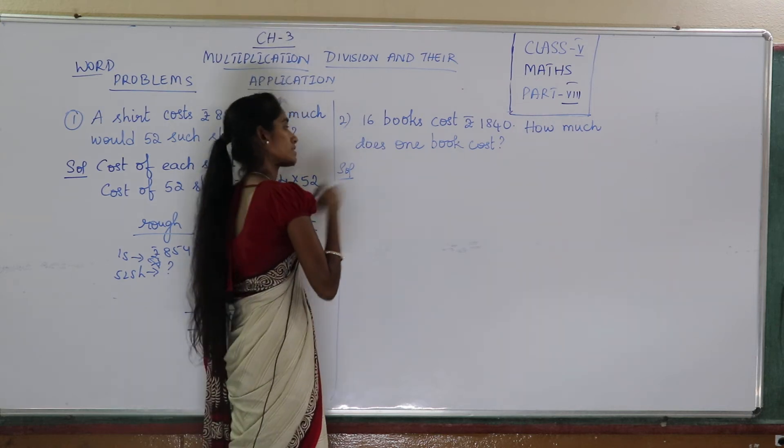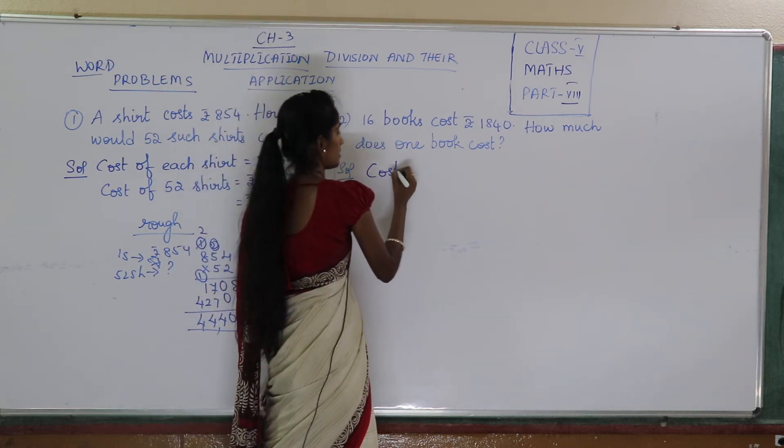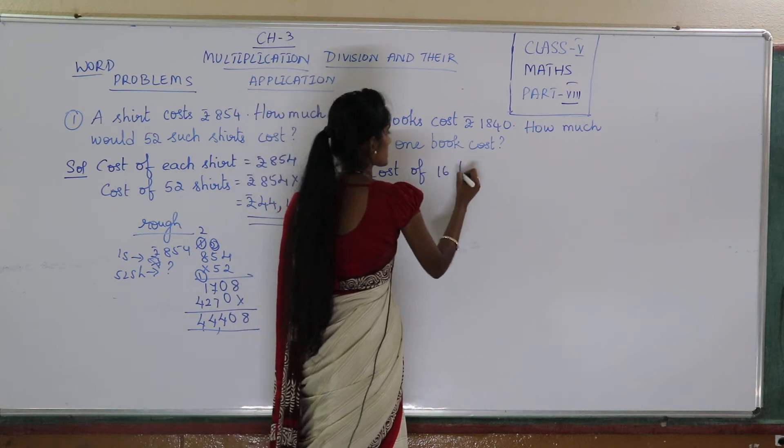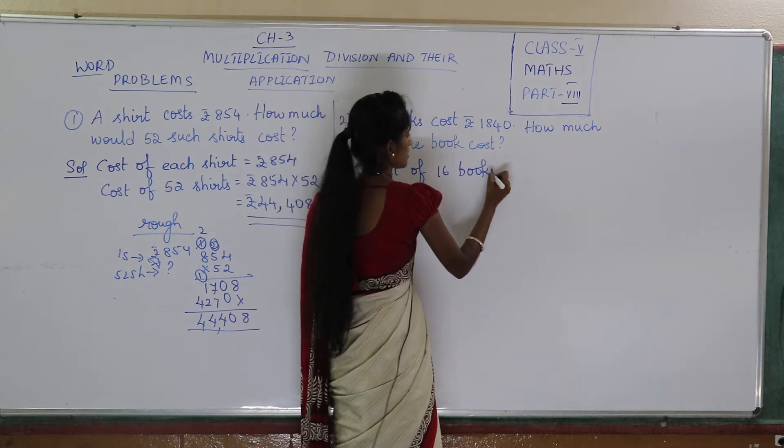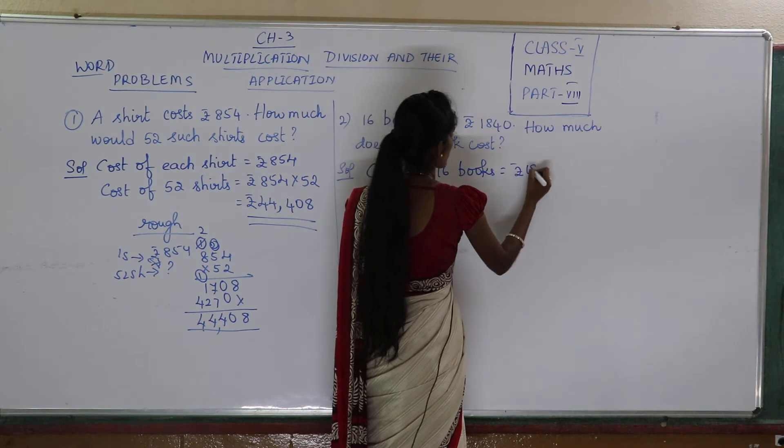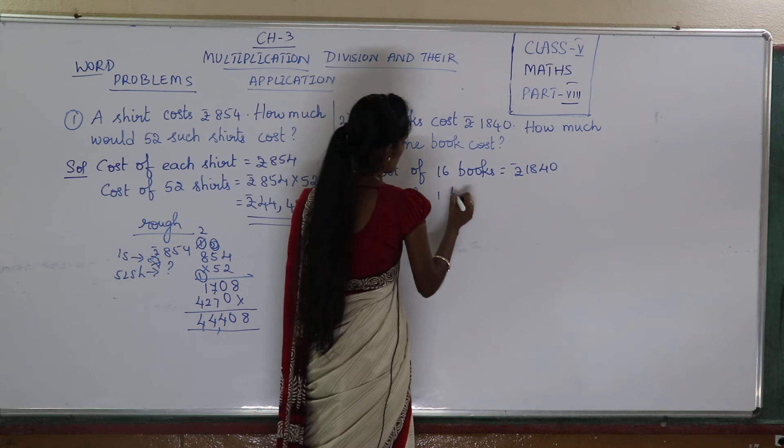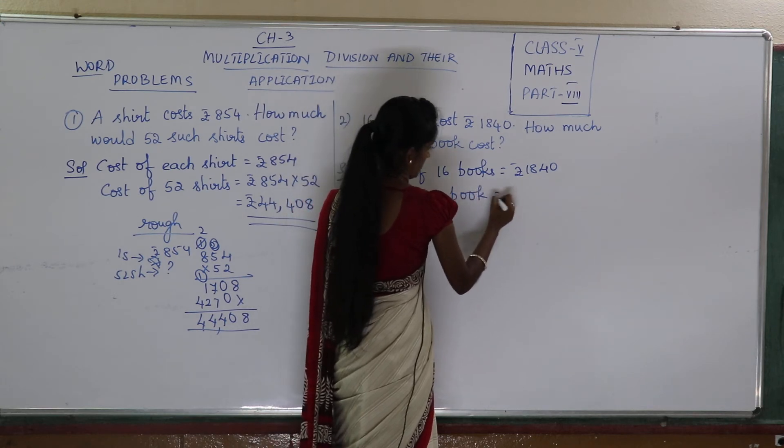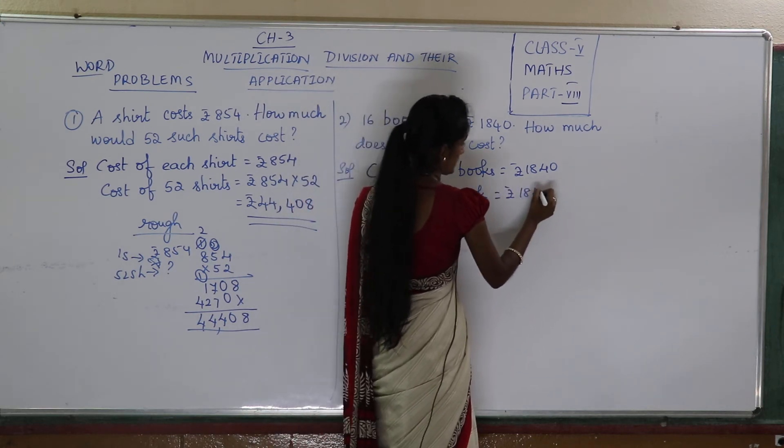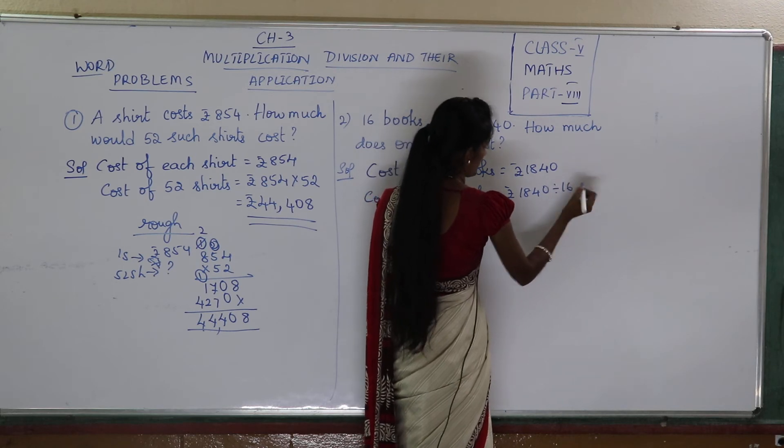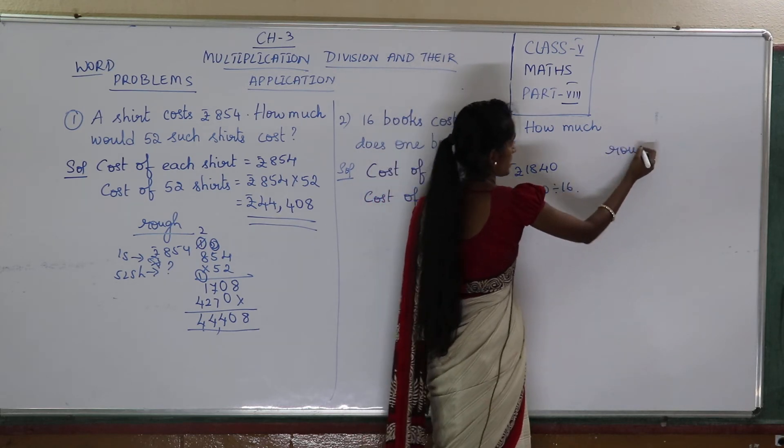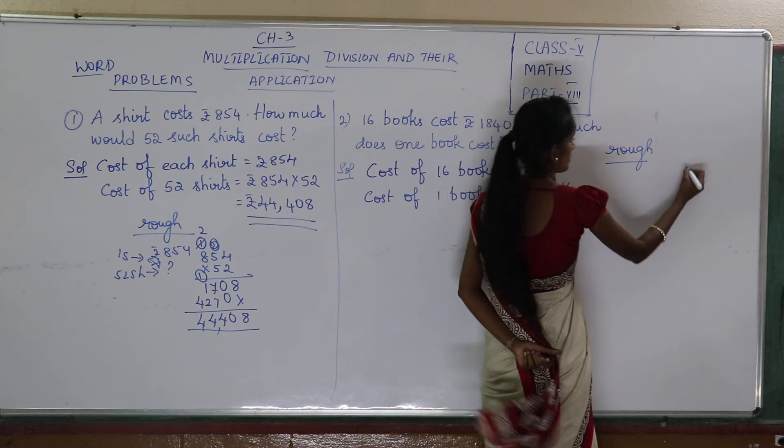So this is your division. Now cost of 16 books is 1840. Now cost of one book or each book is 1840 divided by 16. Now I have your space, so I am doing the rough work here.